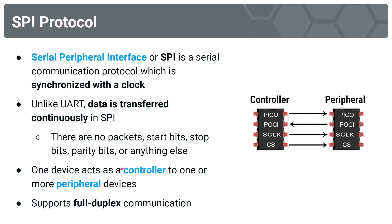In SPI communication, we'll have one device which acts as a controller, communicating with one or more peripheral devices. The controller basically controls the peripherals. Usually a conversation will be initiated by the controller — it might say, 'hey, peripheral device, I want you to pay attention to me and send me this information.' The peripheral will respond with that information. This is described as a full duplex transmission mode because the controller can send information to the peripheral at the same time the peripheral is sending information back.